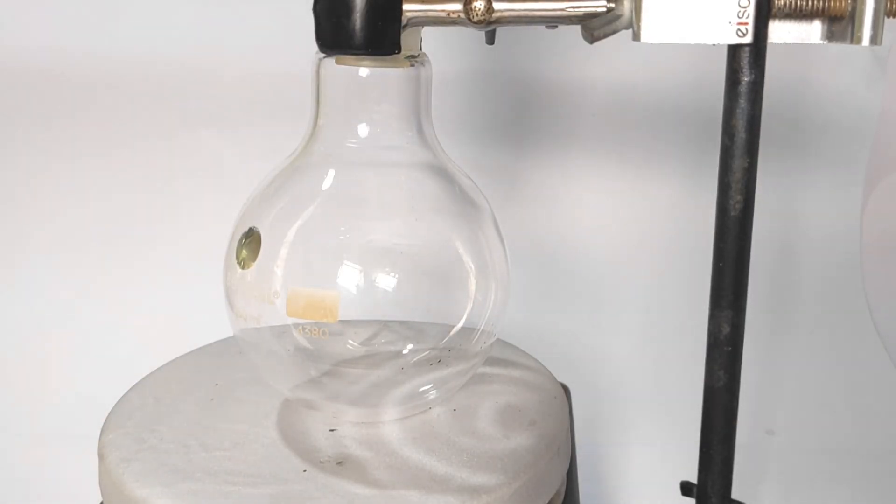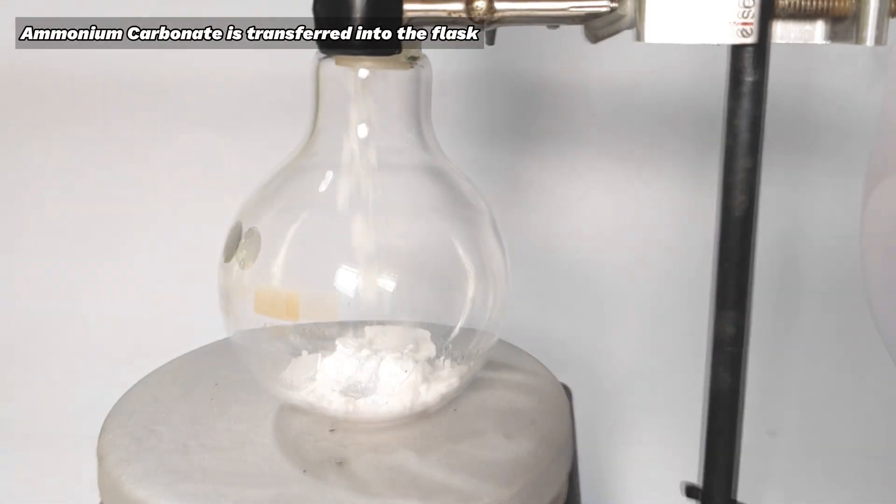A 250 milliliter round bottom flask was clamped on a stand over a hot plate stirrer and a stirring bar was placed inside. Now, 18 grams of ammonium carbonate was charged into the flask.